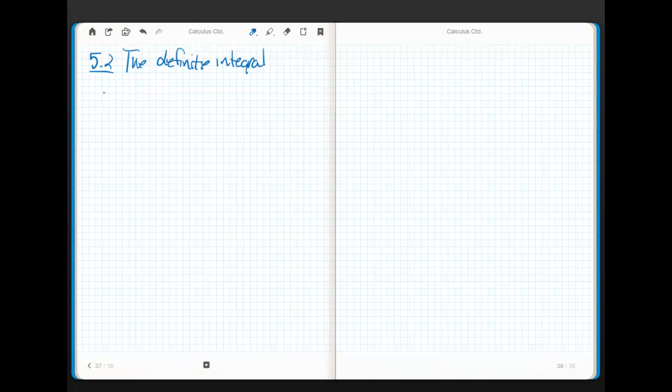Last time we said that if we take a function from A to B, the area underneath that function - if I take an infinite number of infinitely thin rectangles from A to B, then I can figure out the exact area under the curve from A to B.